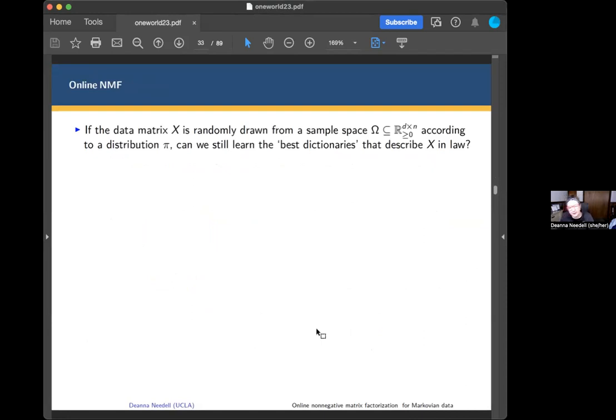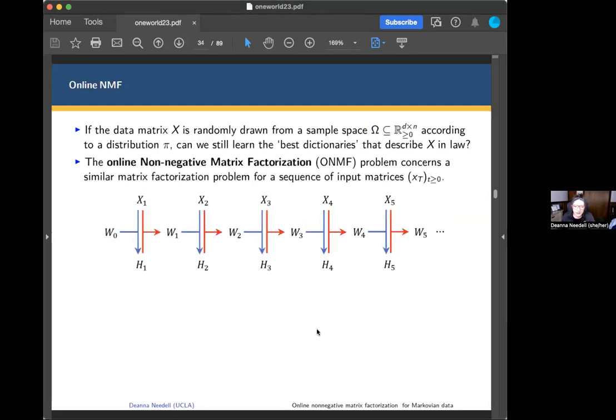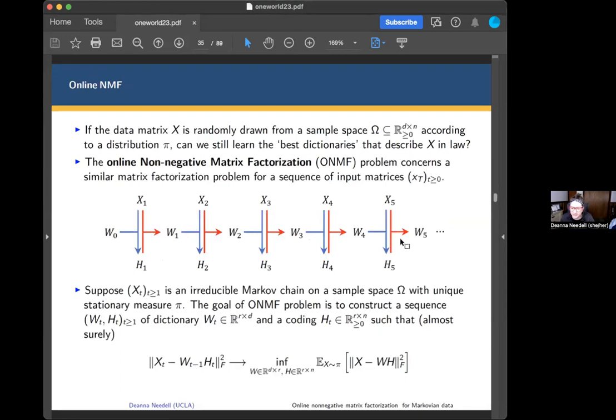So we're going to go to the online setting. If the data matrix X is drawn randomly from some sample space according to some distribution pi, then we ask, can we still learn the best factorization to describe this data in law in some way? Here's the same schematic in the online case. Everything looks pretty much the same, except now the data is changing itself. We have X1, X2, X3, and so on. But we're still going to do the same thing. We have the W and H from the previous time step, fix one, solve for the other, and so on. So the approach is really pretty much the same. There are a couple of logistics we'll have to worry about, but we'll be able to get around those.